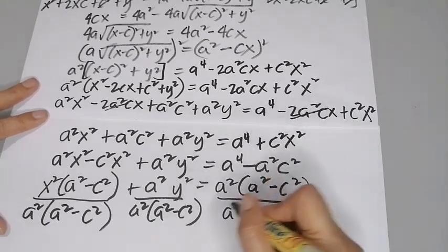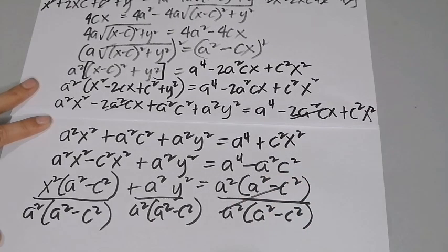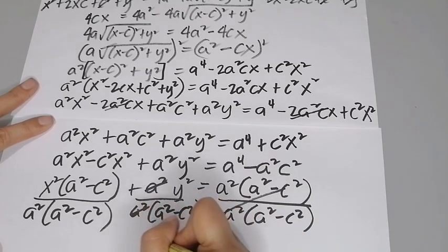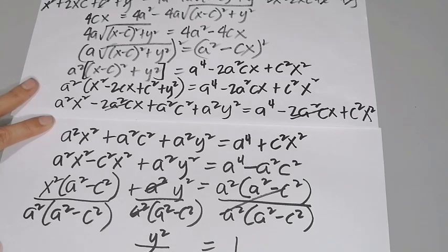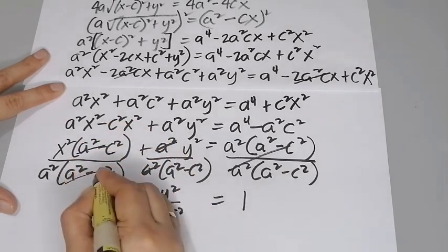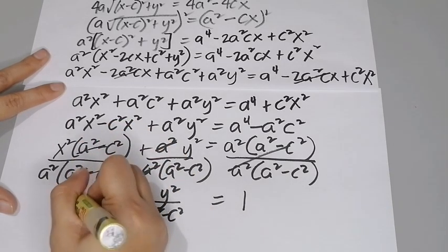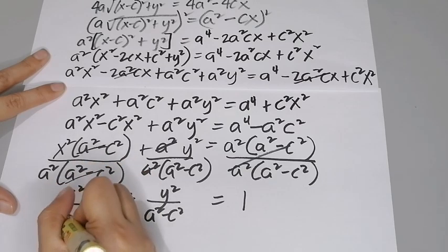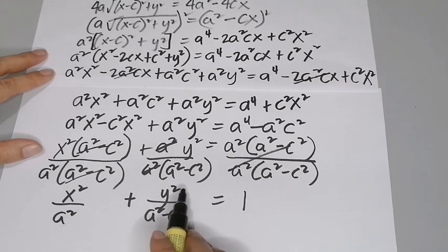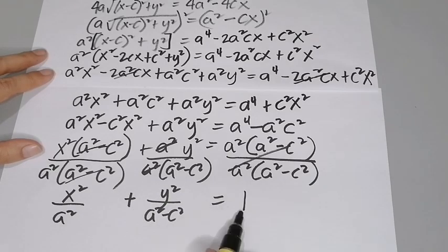After dividing, the x² terms cancel with a²(a²−c²), leaving x²/a². The y² term gives y²/(a²−c²), since a² cancels. So we have x²/a² + y²/(a²−c²) = 1.